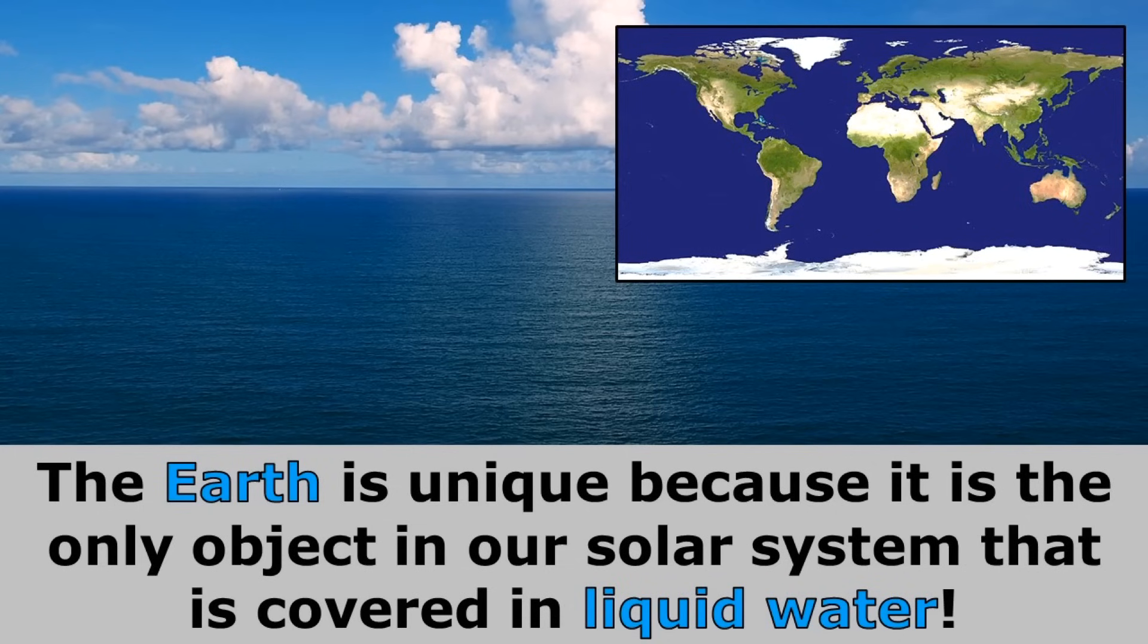The Earth is unique because it is the only object in our solar system that is covered in liquid water. Oceans cover about 71% of the Earth's surface.